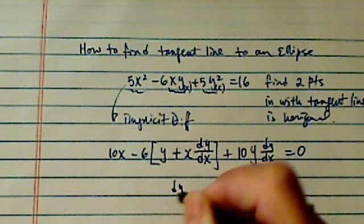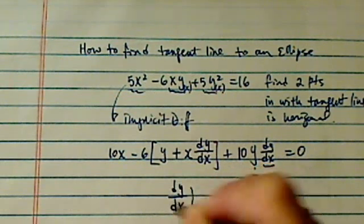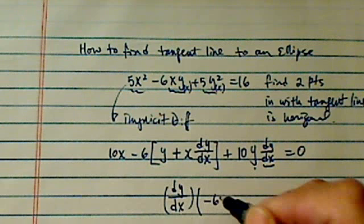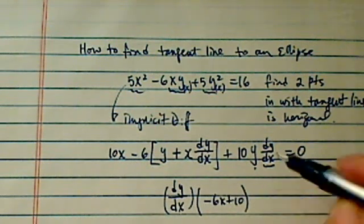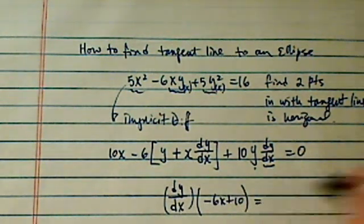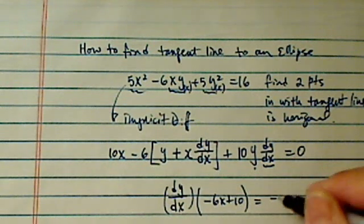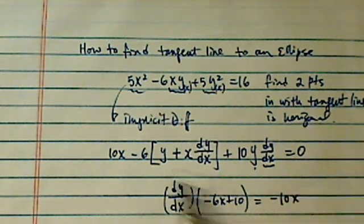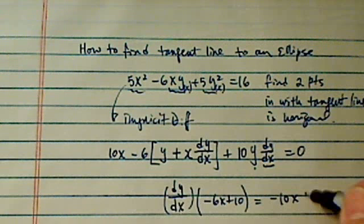Let's gather the dy dx together. That's the term we're looking for. For this one, I have a minus 6x plus 10y. The rest of the stuff, I'm going to move it over. I have a minus 10x. Here I have a minus 6y, so I have a plus 6y.